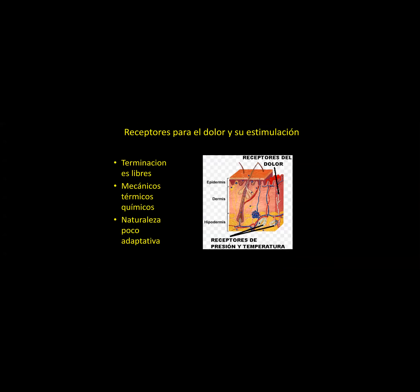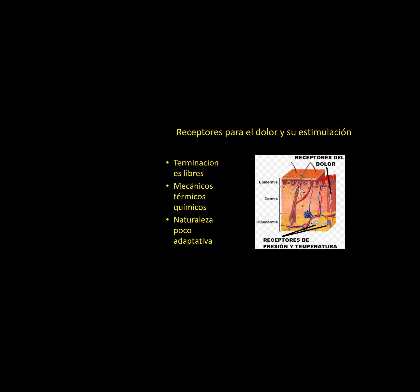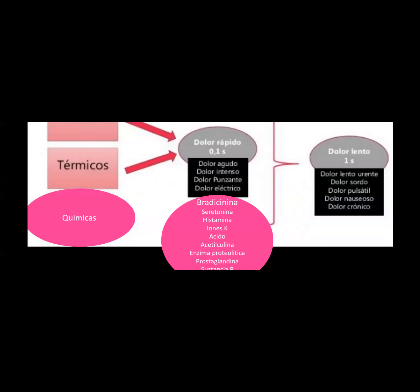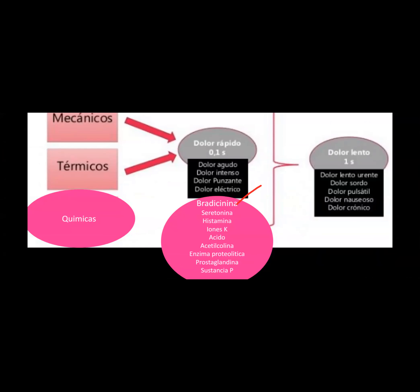Estamos describiendo la característica del dolor y las sustancias químicas que van a estimular las terminaciones libres. Como principal exponente tenemos a la bradicinina. También tenemos la serotonina, la histamina, iones de potasio. El pH ácido estimula las fibras del dolor. La acetilcolina también es una sustancia que estimula las fibras del dolor. Enzimas proteolíticas, prostaglandinas y sustancia P.